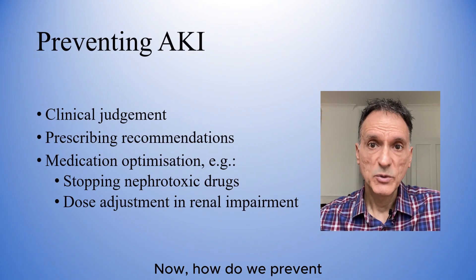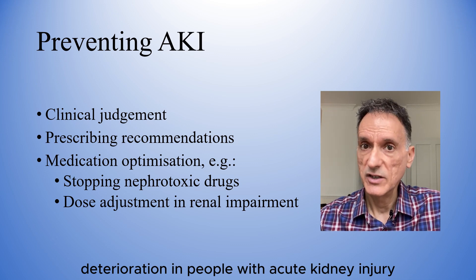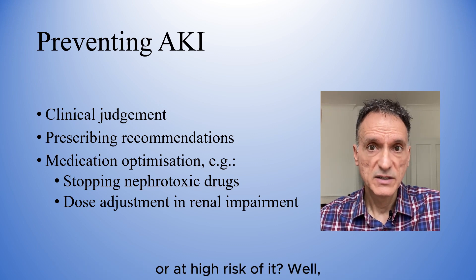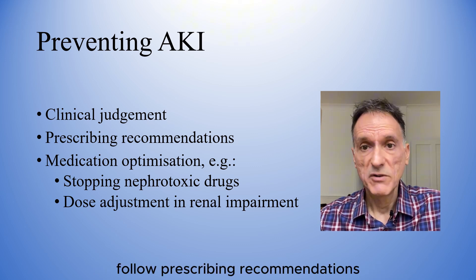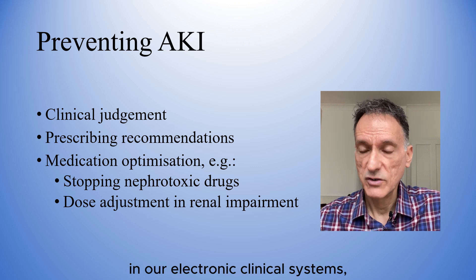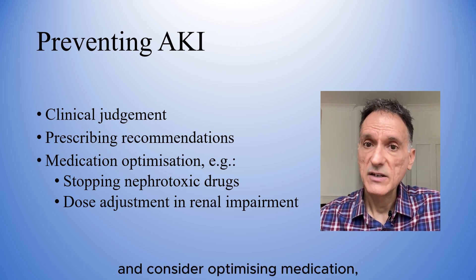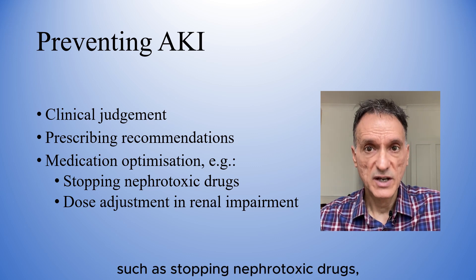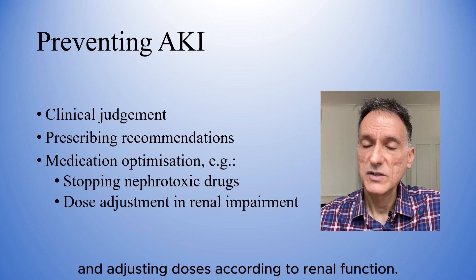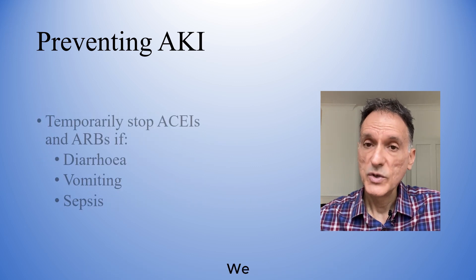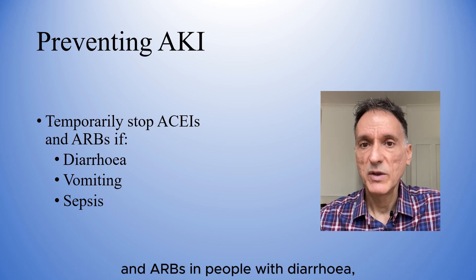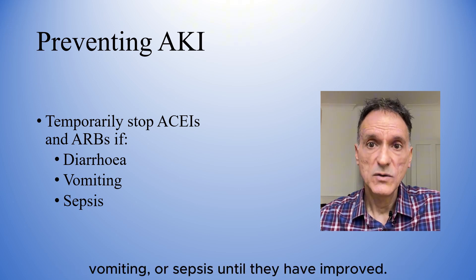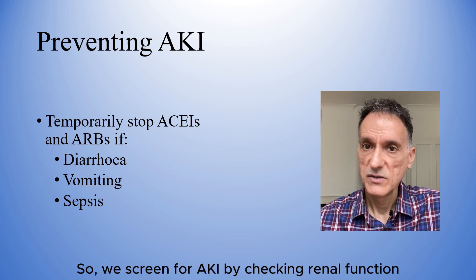How do we prevent deterioration in people with acute kidney injury or at high risk of it? We will use our clinical judgment, follow prescribing recommendations in our electronic clinical systems, and consider optimizing medication, such as stopping nephrotoxic drugs and adjusting doses according to renal function. We should also consider temporarily stopping ACE inhibitors and ARBs in people with diarrhea, vomiting, or sepsis until they have improved.